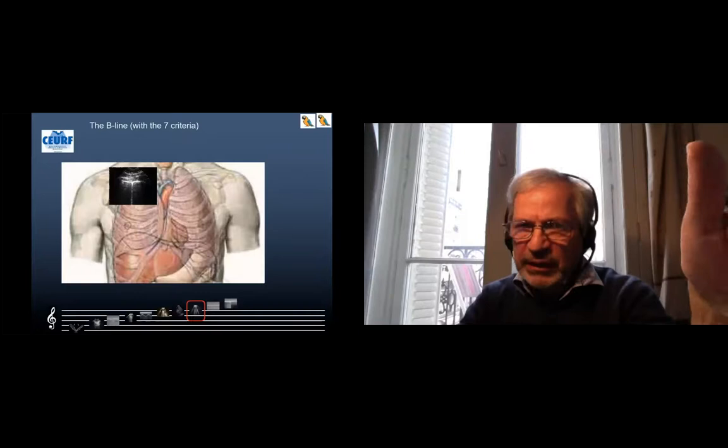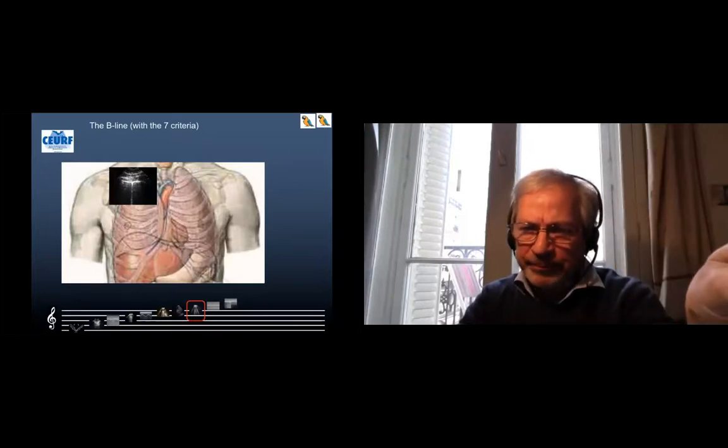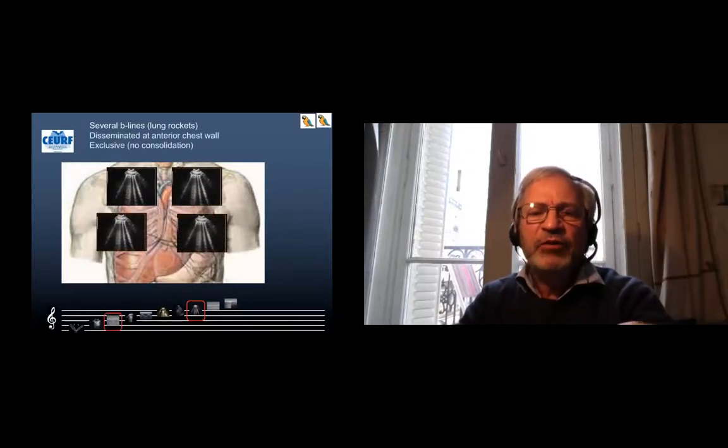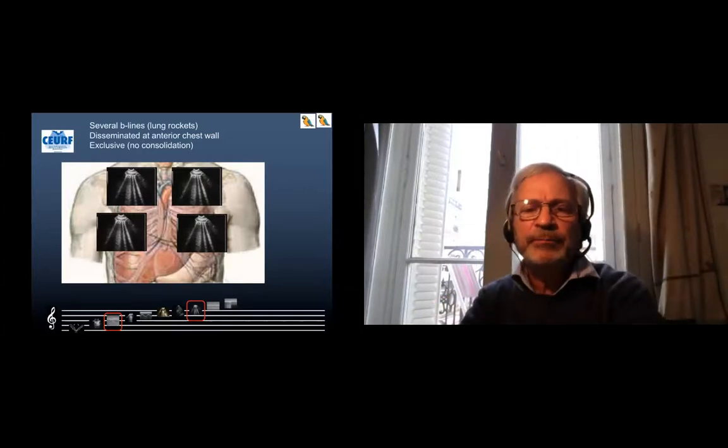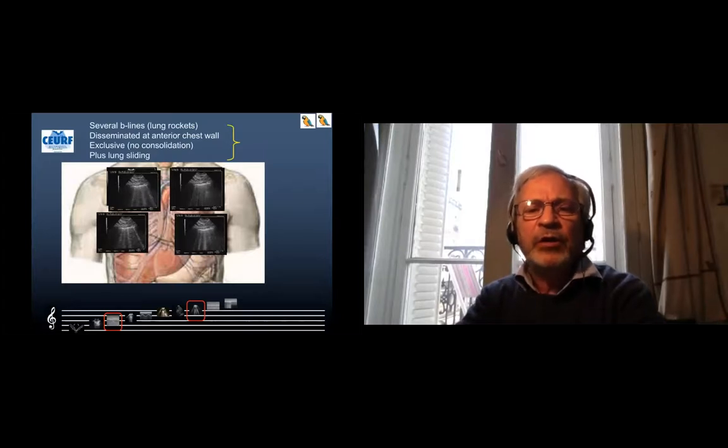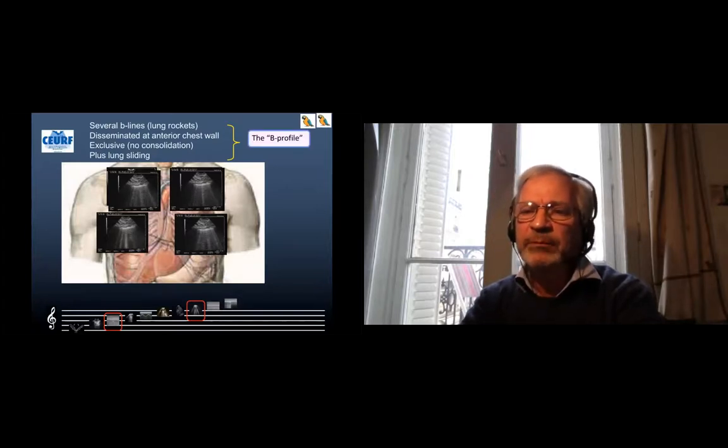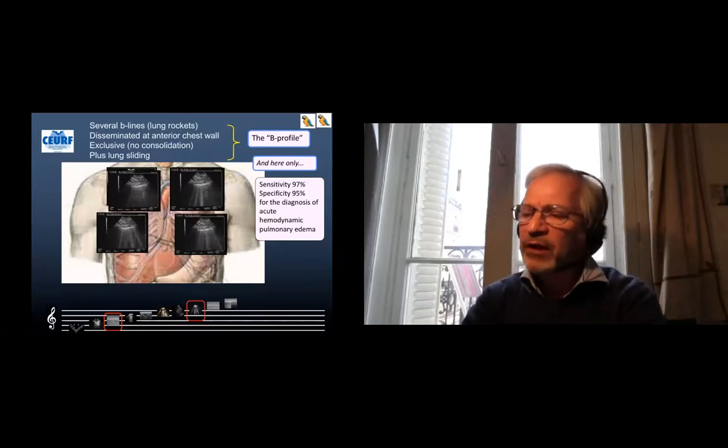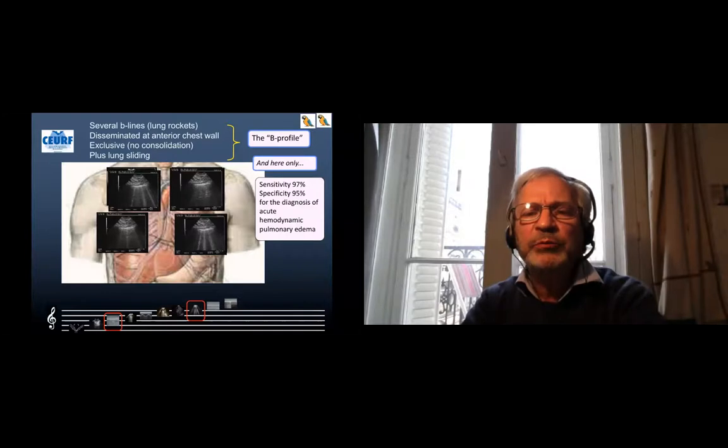Time is running very fast. We have to remind again the B profile, which is maybe for the beginners the most important part of the BLUE protocol. So we say it differently: this is a B-line with the seven criteria. These are lung rockets, several B-lines. These several B-lines are disseminated harmoniously to the whole anterior wall. I do not see any consolidation and the lung sliding is present. This is the B profile. And now and only now we can say sensitivity 97%, specificity 95% for acute hemodynamic pulmonary edema.